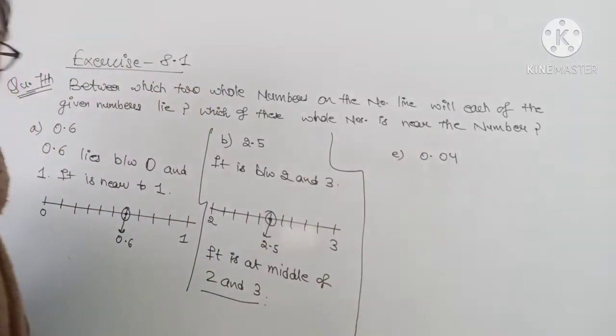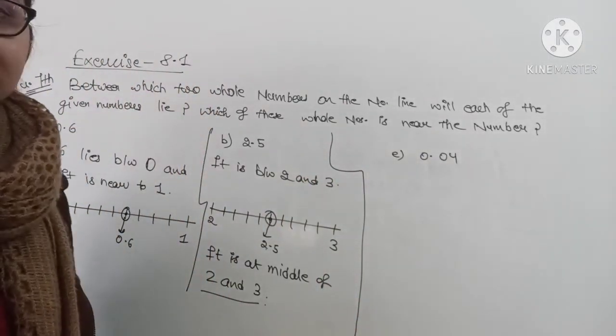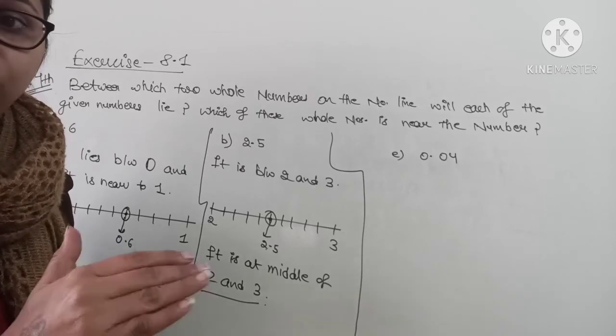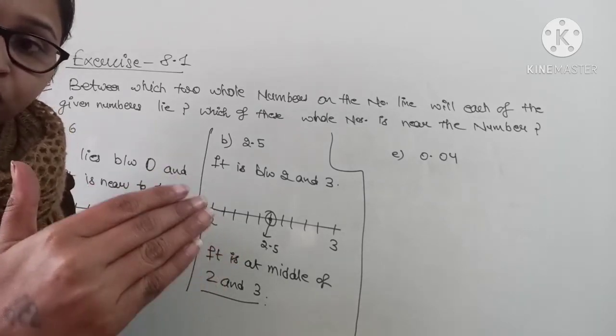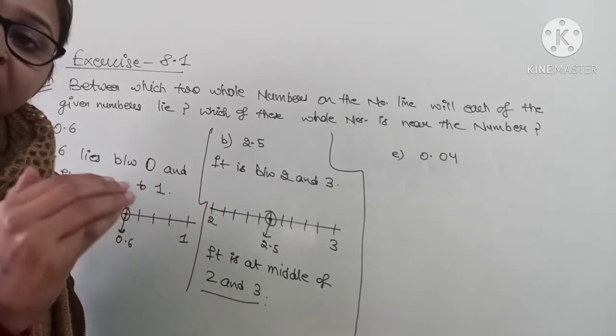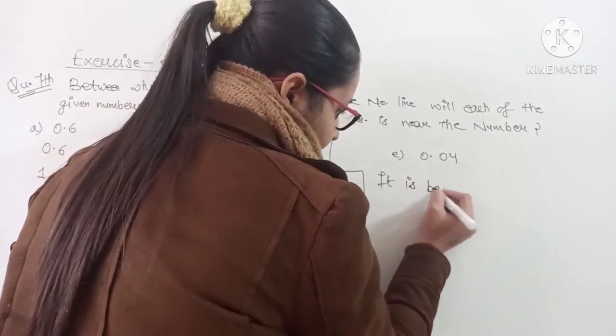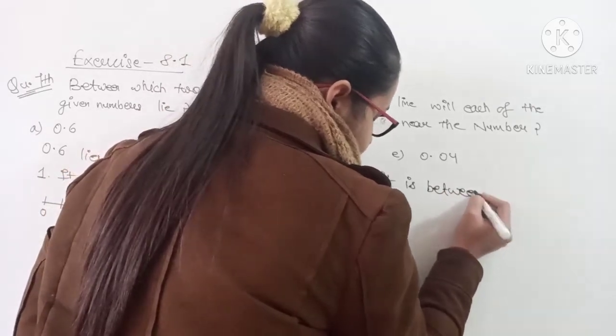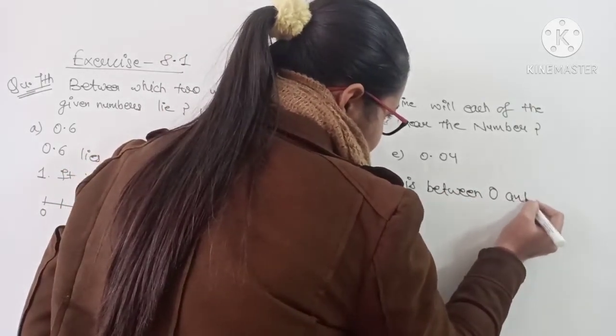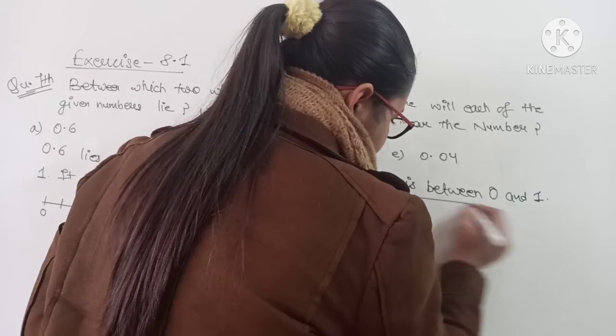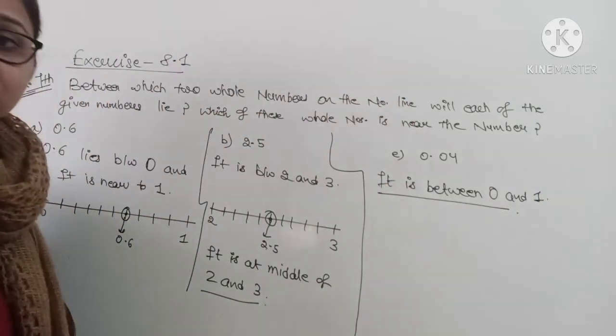Now come to C part, that is 0.04. 0 point something, so obviously it is greater than 0 and less than 1. So you will write it is between 0 and the next number is 1. Okay.